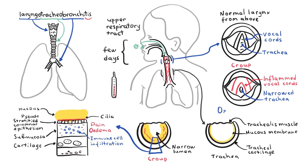The swelling results in partial airway obstruction, which, when significant, results in dramatically increased work of breathing and the characteristic turbulent, noisy airflow known as stridor. Stridor is mainly heard on inspiration because the pressure in this area drops below atmospheric pressure, causing collapse of the airway, resulting in further turbulent flow of air through this narrow airway.